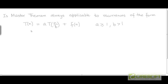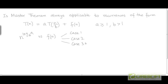For all the examples that we saw, we could apply the master theorem because when we compared n to the power log A base B with F(n), the result was either case 1, case 2, or case 3. Case 1 was when F(n) is in O(n^(log_B(A) - ε)), or F(n) grows polynomially smaller than n^(log_B(A)).